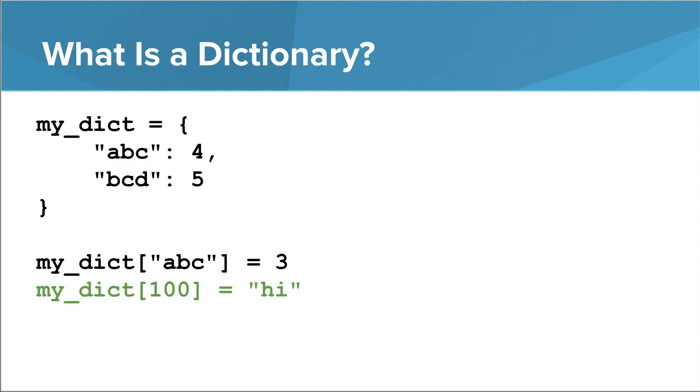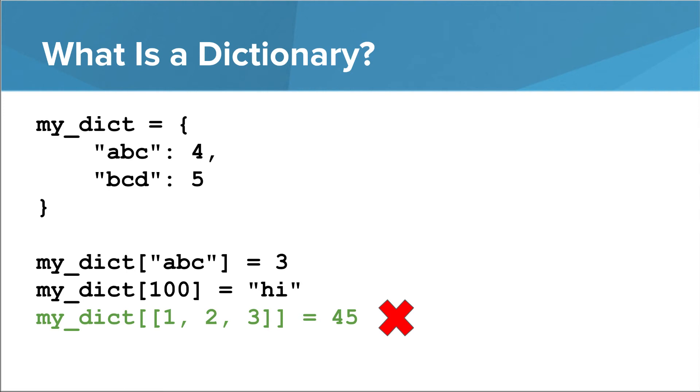The keys in a dictionary can be of different types. This dictionary now has a couple of string keys and an integer key. You cannot, however, use mutable things as keys. This program attempts to add a list as a key with a value of 45. If you try to run this, the error that appears complains about an unhashable type. If Python complains about something being unhashable, it probably means you're using something as a key that shouldn't be used as a key.